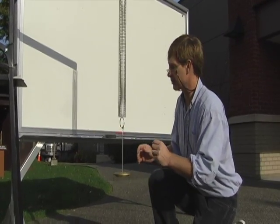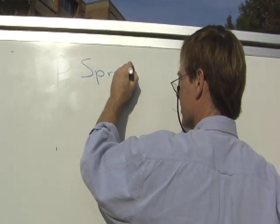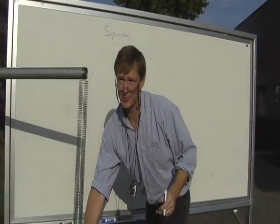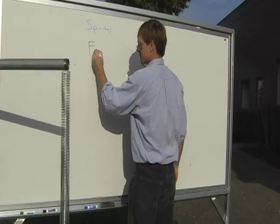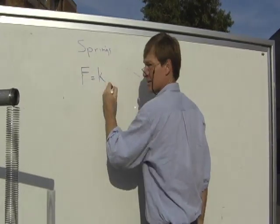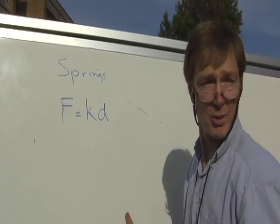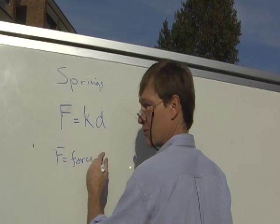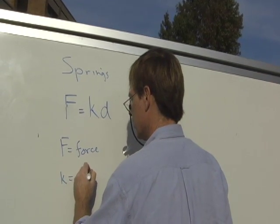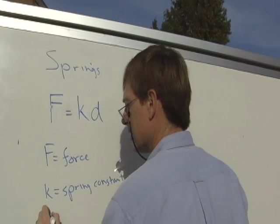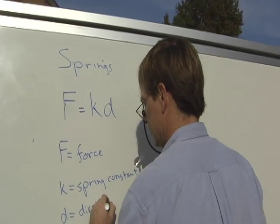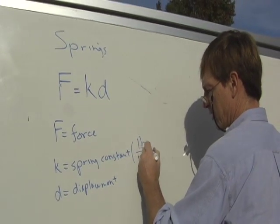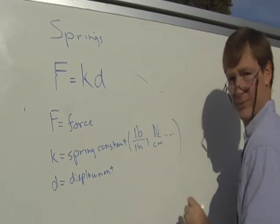So let's figure out how to do an oscillating spring. As I stretch a spring, it takes more force to stretch it further and further. So the force required to stretch a spring is equal to Hooke's law constant k times the displacement from equilibrium, from where it's not stretched or compressed. F is the force stretching or compressing, k is the spring constant, and d is the displacement. The spring constant has units like pounds per inch, pounds per foot, or newtons per centimeter.